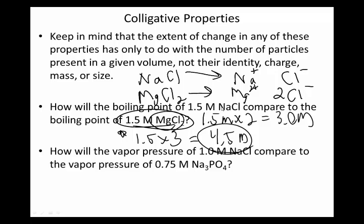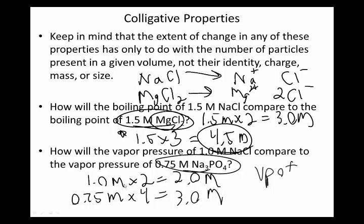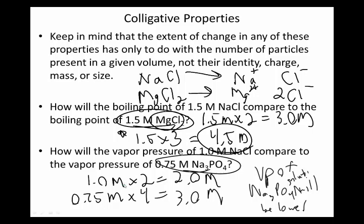Let's look at an example. How will the vapor pressure of 1.0 molar sodium chloride compare to the vapor pressure of 0.75 molar sodium phosphate? For sodium chloride — 1.0 molar times 2 particles gives an effective concentration of 2 molar. For sodium phosphate (Na₃PO₄), which dissociates into 4 particles, 0.75 molar times 4 gives an effective concentration of 3 molar. So the vapor pressure of the sodium phosphate solution will be lower, because there's a greater colligative effect — adding more solute lowers the vapor pressure.